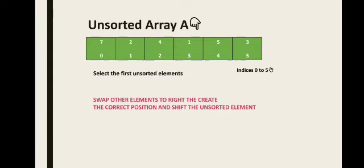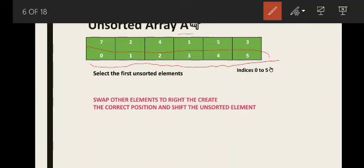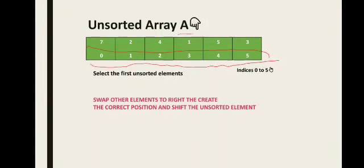Let's say we want to sort a list of integers given in the form of an array. We have six elements in this array with indices from 0 to 5. What we can do is divide the array into two subsets. Initially, elements till index 0 will be part of the sorted subset, because if you have one element in a set the set is always sorted.